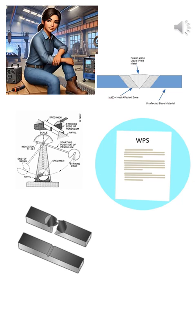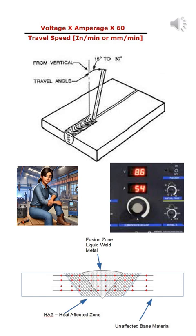That's why the WPS is so specific about heat input. It's not just about passing code. It's about making a weld that lasts. So when you follow a WPS and stick to your heat input limits - travel speed, amperage, voltage - you're not just ticking boxes. You're protecting the microstructure, the toughness, and ultimately the strength of the weld.